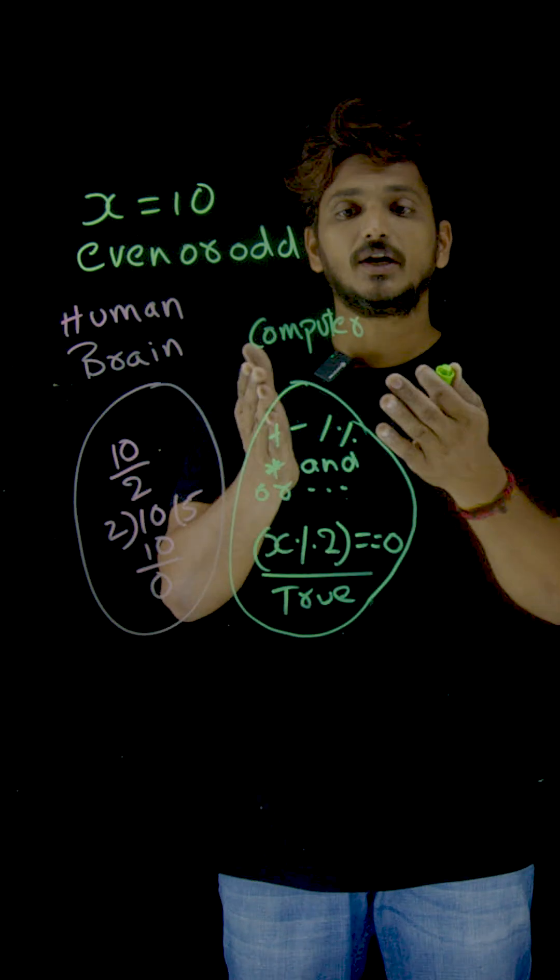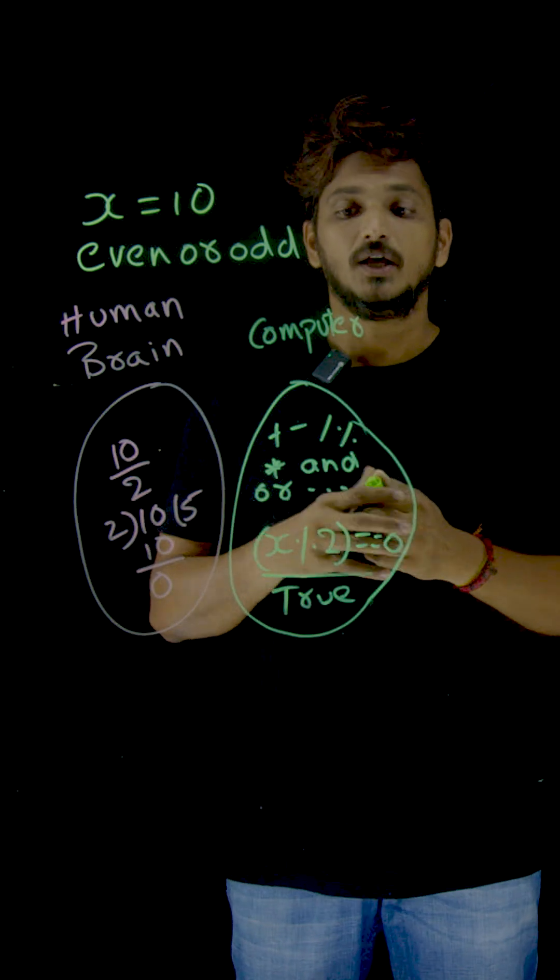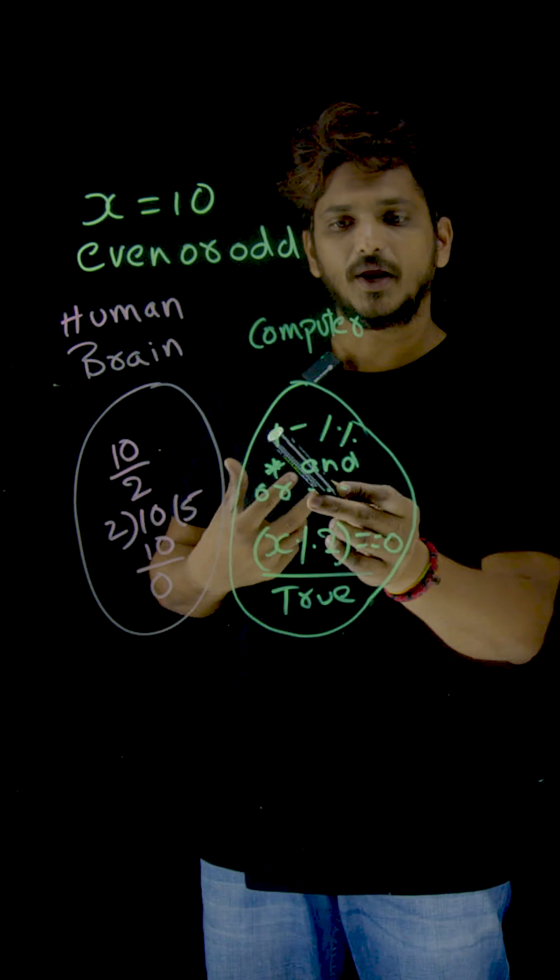Think that this is a computer brain. Up to now, what are the operations we learned? Addition, multiplication, division, modulus, and, or, bitwise, and all these operations.